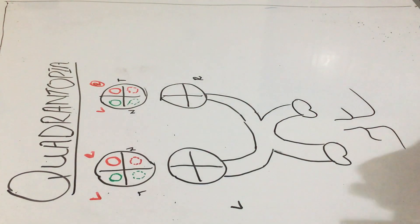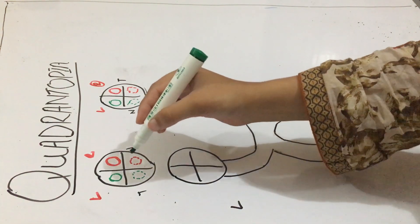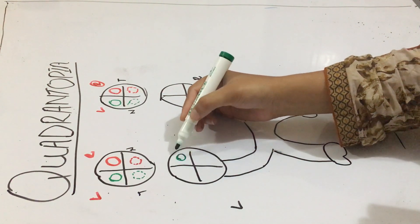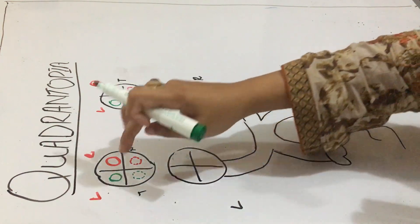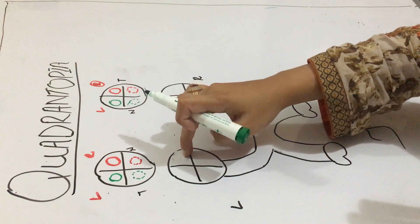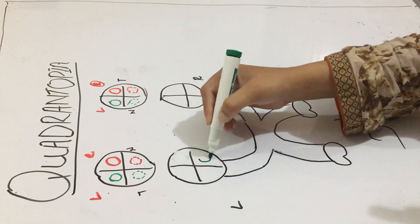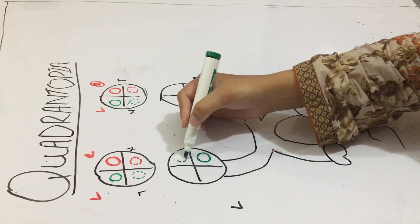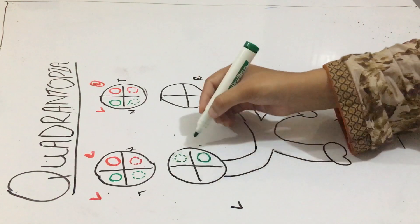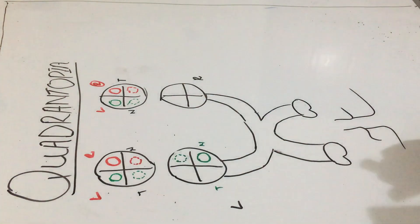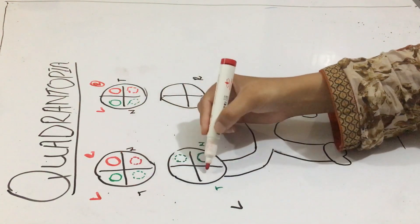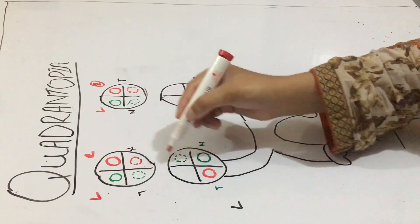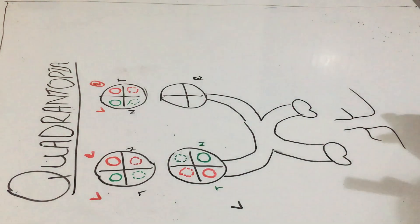Now you know that from the lateral side, these light rays will fall here. One important point: from the superior quadrant they will not go into the superior quadrant — that would be a mistake. Instead, they will go into the inferior quadrant. And from the inferior quadrant they will go to the superior quadrant. Similarly, from the superior quadrant it will go to the inferior side of the eye, and from the inferior quadrant it will go to the superior quadrant.